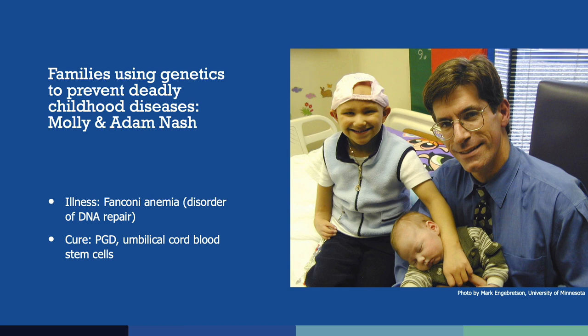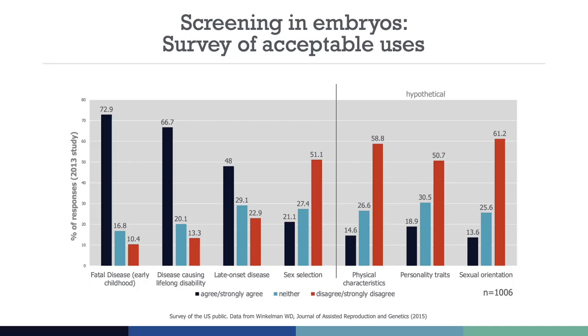While many people were supportive, the Nashes also faced criticism that Adam was a designer baby and suffered unjust risks, conceived only to help his sister. For more information on genetic technologies related to reproduction, check out PGD's lesson on reproductive genetic testing.